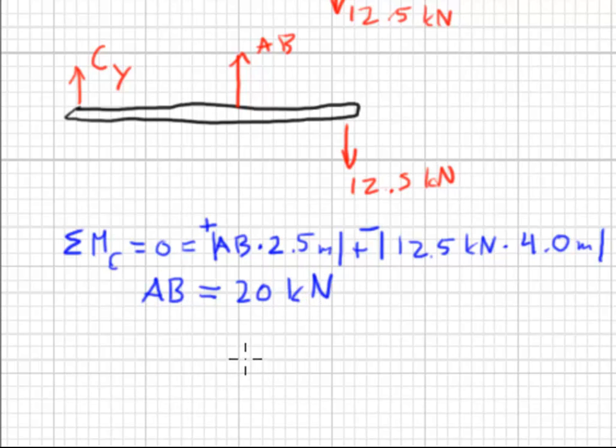Okay. Now we have our force. Our area is fairly straightforward. It is 20 millimeters squared. Notice this is a square cross-section. And this yields 400 square millimeters.